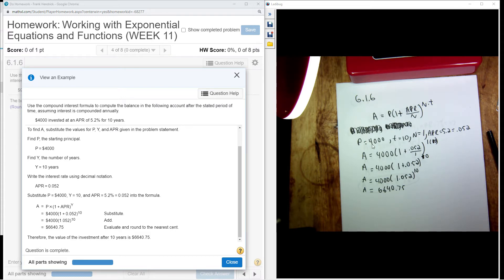I wrote up my compound interest formula and assigned values to my variables. So my principal is $4,000, my time is 10 years. It says here compounding annually, so it's applied once a year.